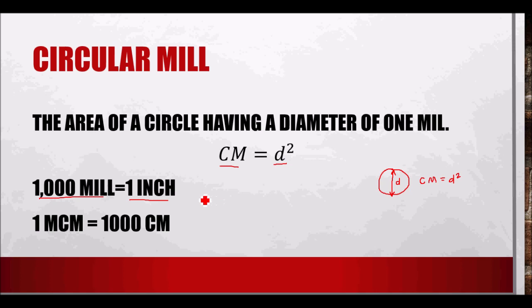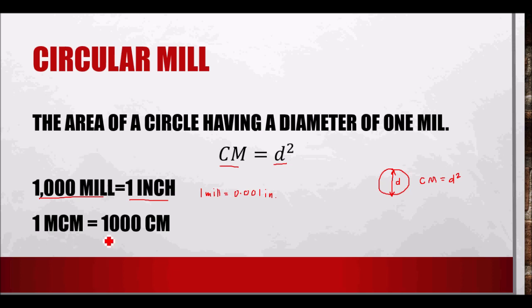One mil is equal to 0.0001 inch. One MCM (mega circular mil) is equal to one thousand circular mils.